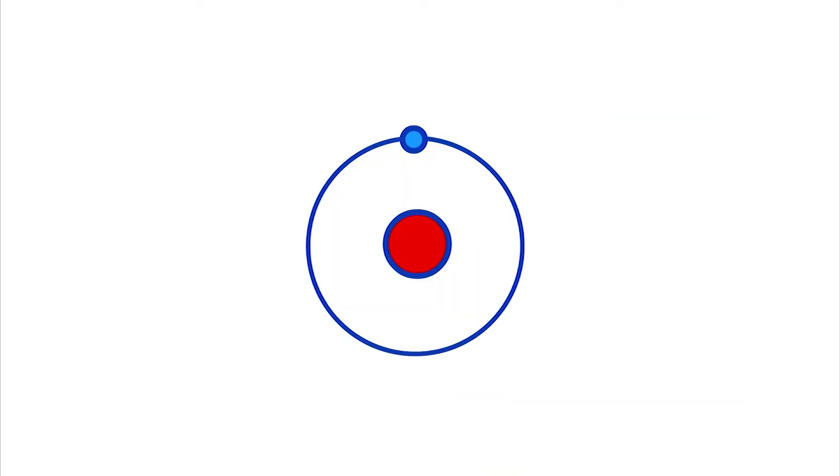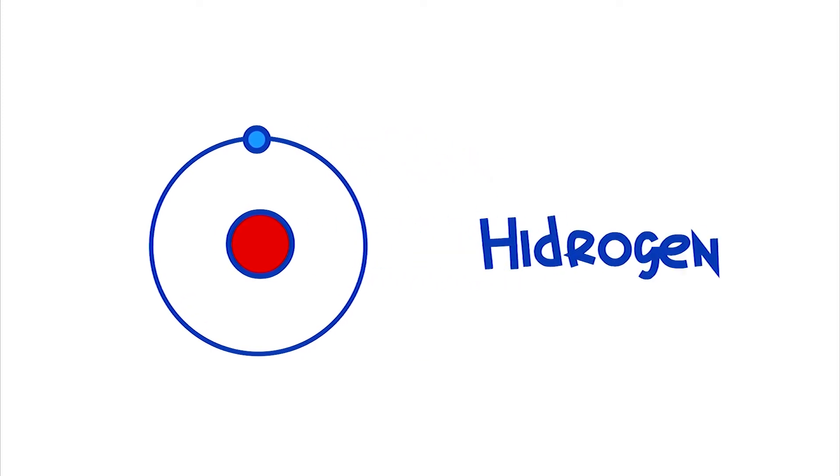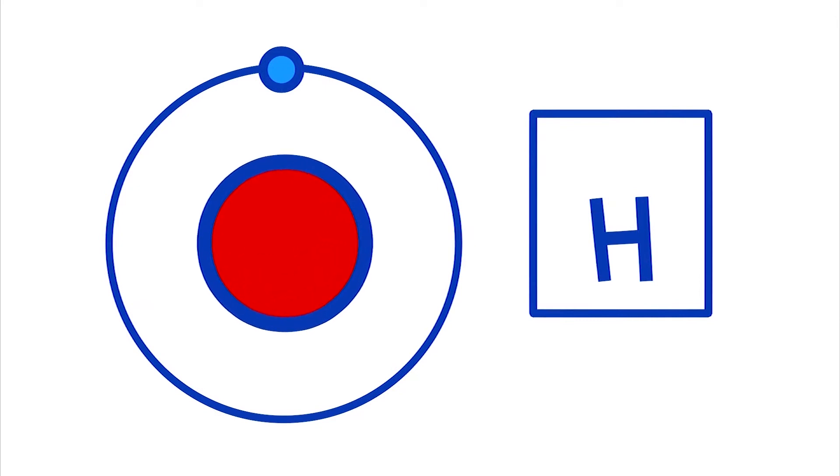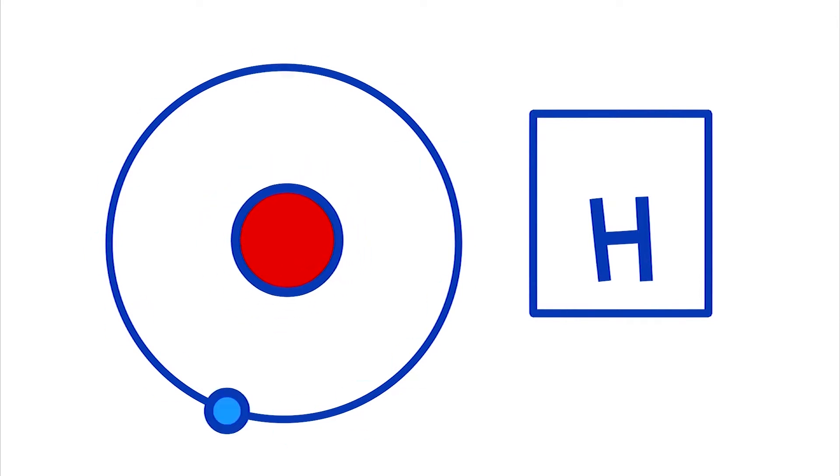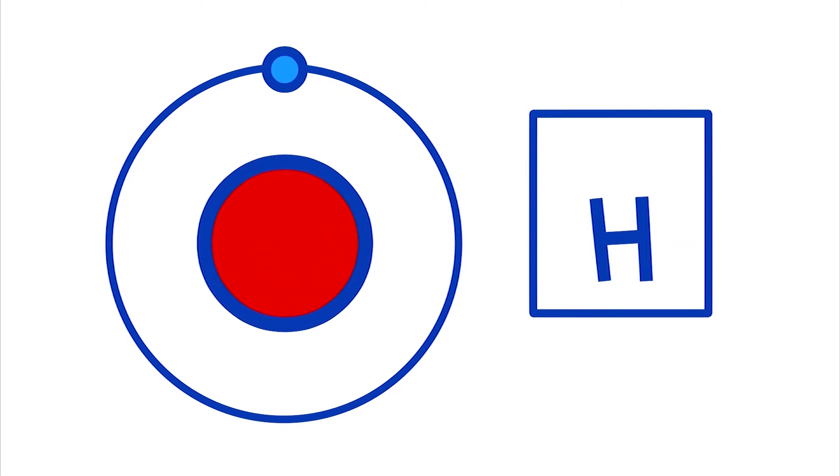This chemical element is a gas called hydrogen. It's the simplest element of all because it has only one proton at its nucleus and one electron spinning around. So if hydrogen has only one proton at its nucleus its atomic number is one.